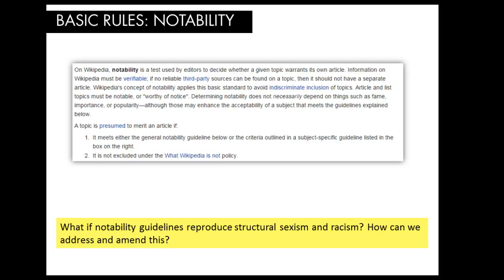Sources also need to be independent of the subject — meaning works produced by the article's subject or someone affiliated with it are excluded. For example, advertising, press releases, autobiographies, and the subject's own website are not considered independent. A topic is presumed to merit an article if it meets notability guidelines or is not excluded under the 'what Wikipedia is not' policy. Significant coverage in reliable sources creates an assumption, but not a guarantee, that a subject should be included. A more in-depth discussion might conclude that the topic should not have a standalone article, particularly because Wikipedia is not an indiscriminate collection of information.